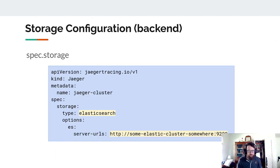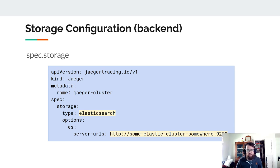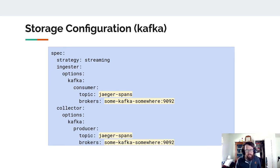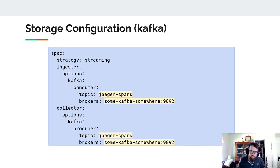Jaeger Query is also deployed and talks directly to the backend database. Storage configuration is done through the same Jaeger CRD object — here we specify we want to use Elasticsearch (Cassandra is also an option). Elasticsearch is the current recommended option for a Jaeger backend. For the streaming strategy, we also need to specify Kafka configuration: on the ingester side you're a Kafka consumer, on the collector side you're a Kafka producer. Both sides need to know where Kafka exists.